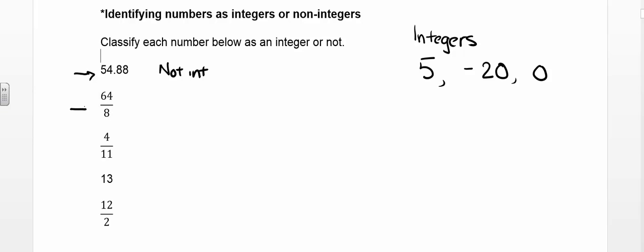The next one, 64 eighths. Well, we see that it's a fraction, but can we reduce it? So 64 divided by 8 actually equals 8, and 8 is an integer.